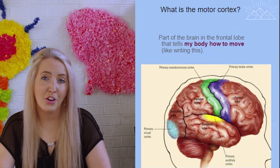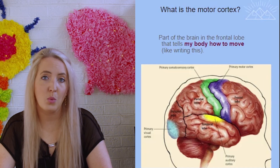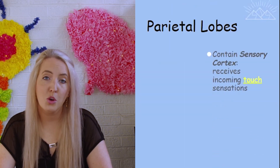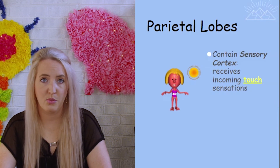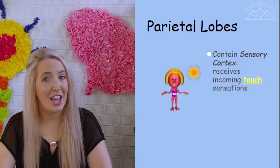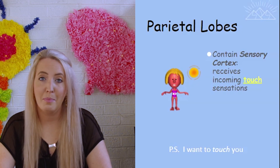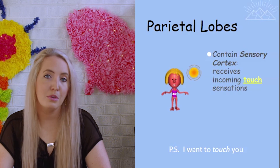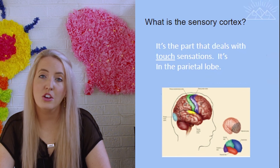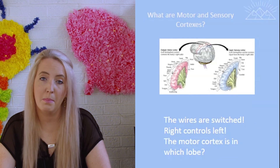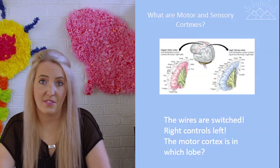The motor cortex sits in the very back of the frontal lobe, right next to the sensory cortex. The sensory cortex — or somatosensory cortex — is in the parietal lobe and is responsible for our sense of touch. A mnemonic: 'PS, I want to touch you,' where P and S stand for parietal and sensory. Interestingly, there is a specific spot on that strip responsible for each body part, so everything we feel and every muscle we move has a specific area of the brain dedicated to controlling that part of the body.